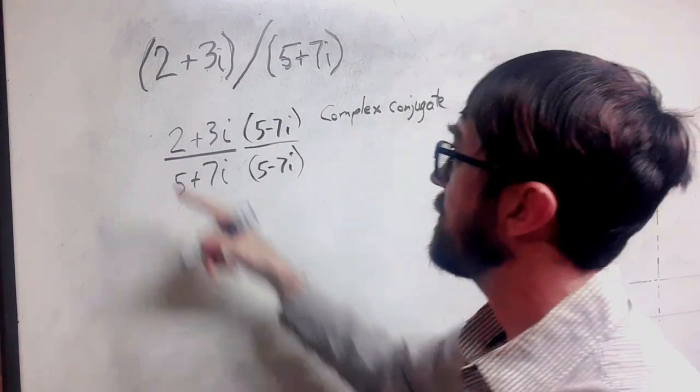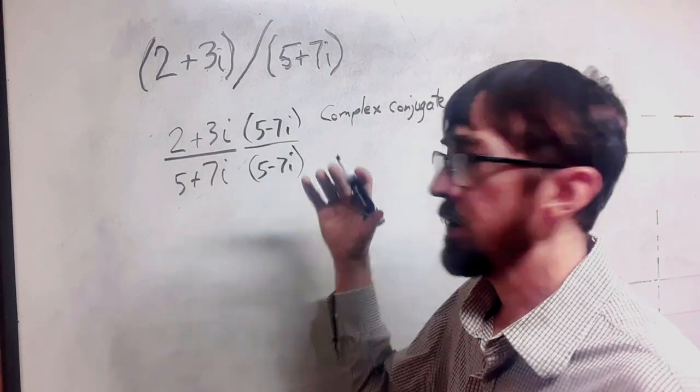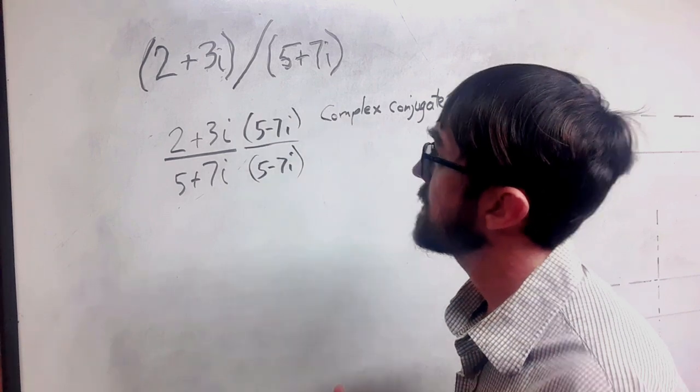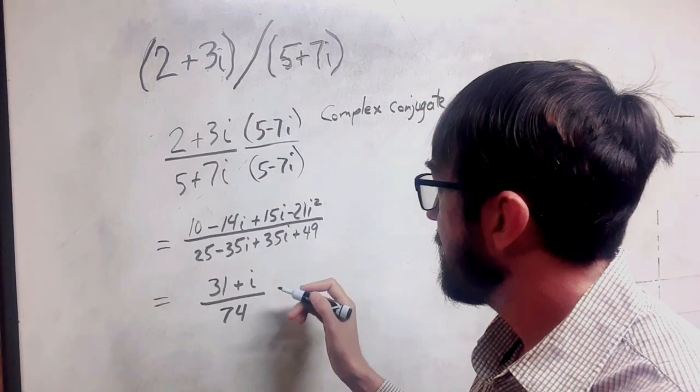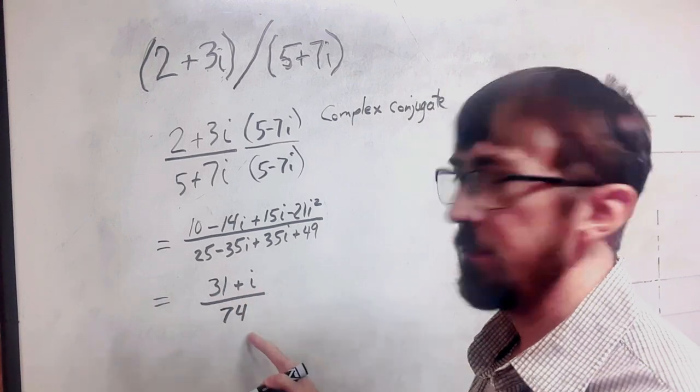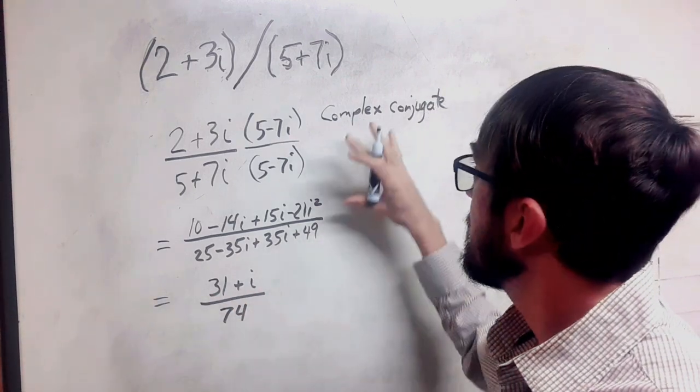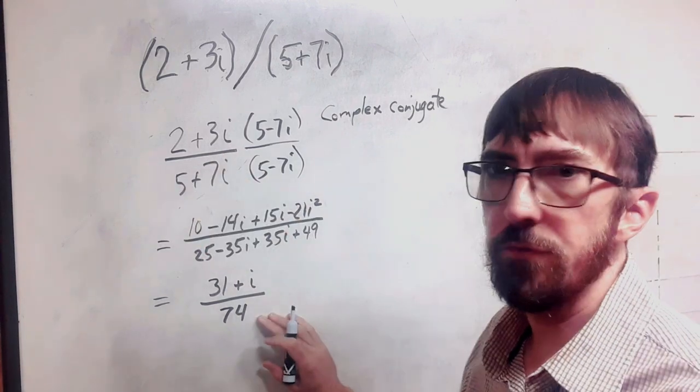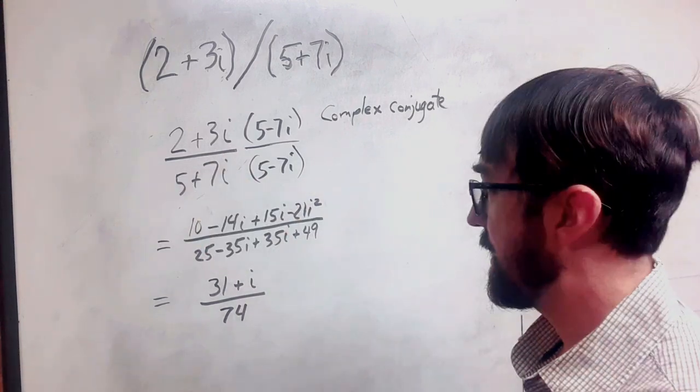So now I'm going to do my double distribution on the top and the bottom here. Once we've simplified this out, we have the fraction 31 plus i divided by 74. The complex conjugate should always work out to give you a real number in the denominator.